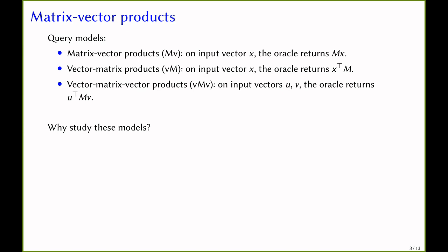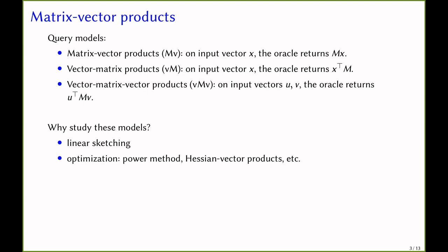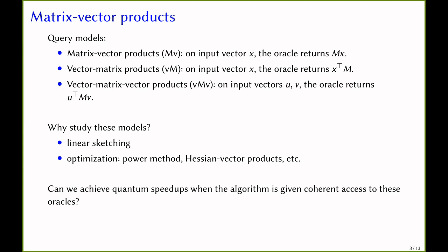You may want to ask why we study these models. There are quite a few reasons. One reason is that it is closely related to an active research area called linear sketching. It is also very related to optimization algorithms that use the power method and the Hessian-vector products. A natural question in the quantum setting is: can we achieve quantum speedups when the algorithm is given coherent access to these oracles? By coherent access, we mean that the algorithm is given access to a unitary that computes a matrix-vector product, vector-matrix product, or vector-matrix-vector product into an ancilla register.